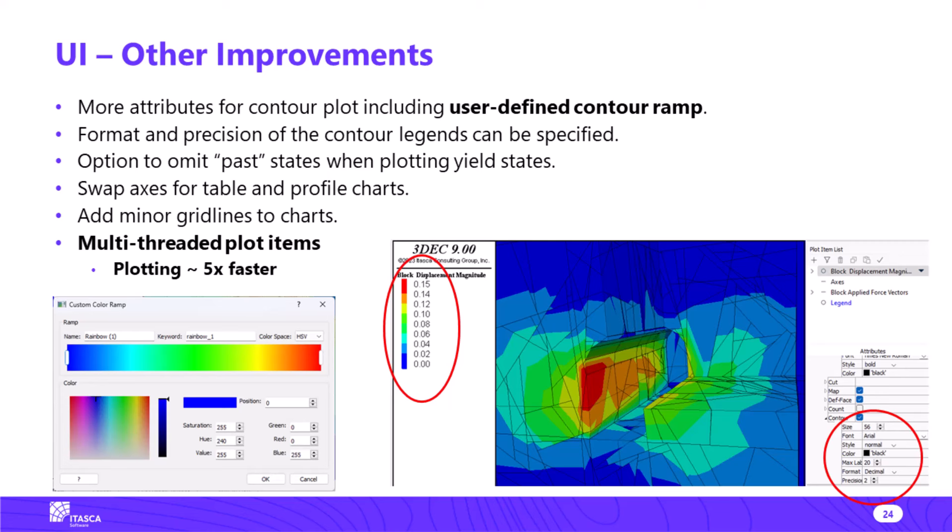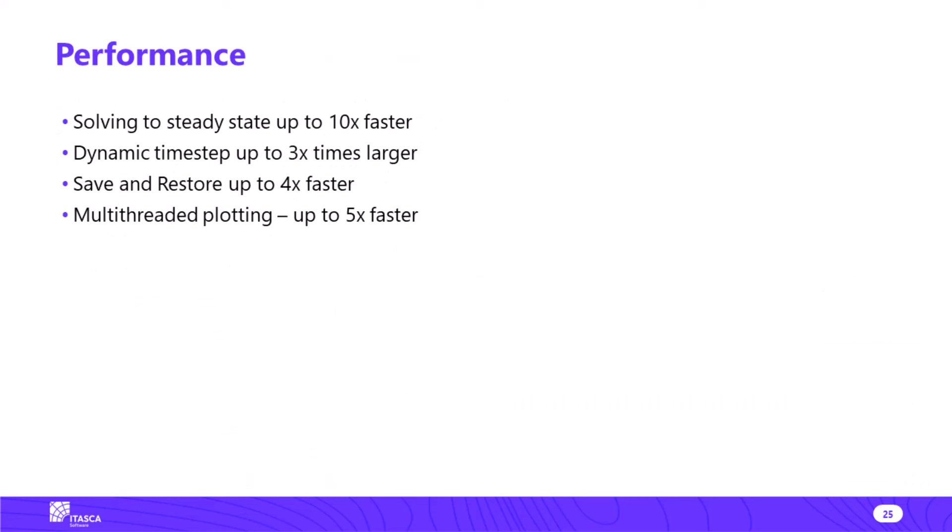To summarize the plotting improvements: user-defined contour ramp, format and precision control of legends, ability to omit past states. A couple more: you can swap axes in tables and profiles, and add minor grid lines to charts. One 3DEC-specific improvement that is very useful: most of the plot engines are now multi-threaded, which was not the case in version 7. Depending on your computer and how many cores you have, plotting can be quite a lot faster.